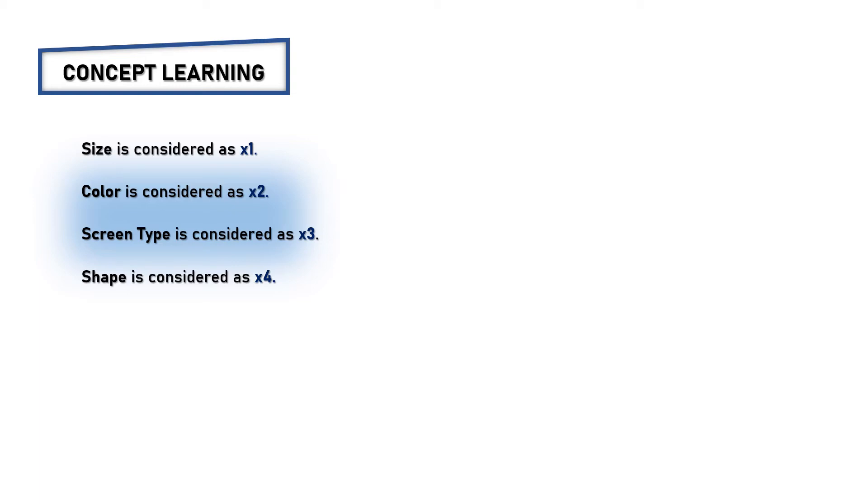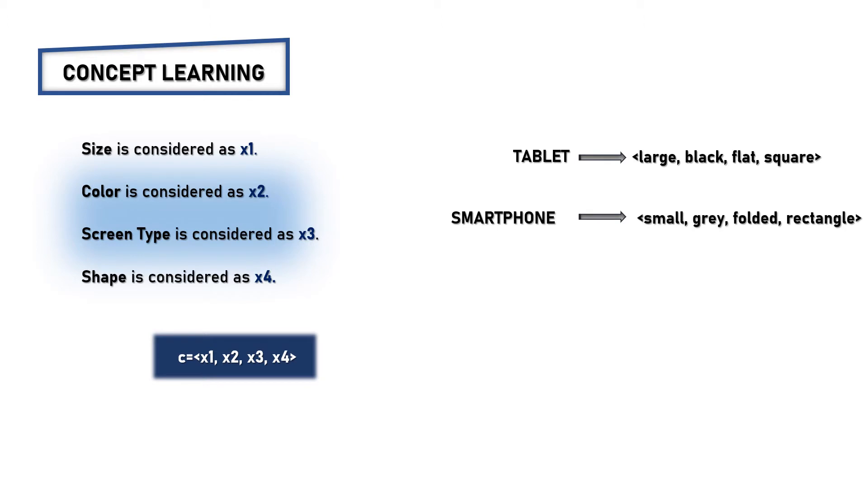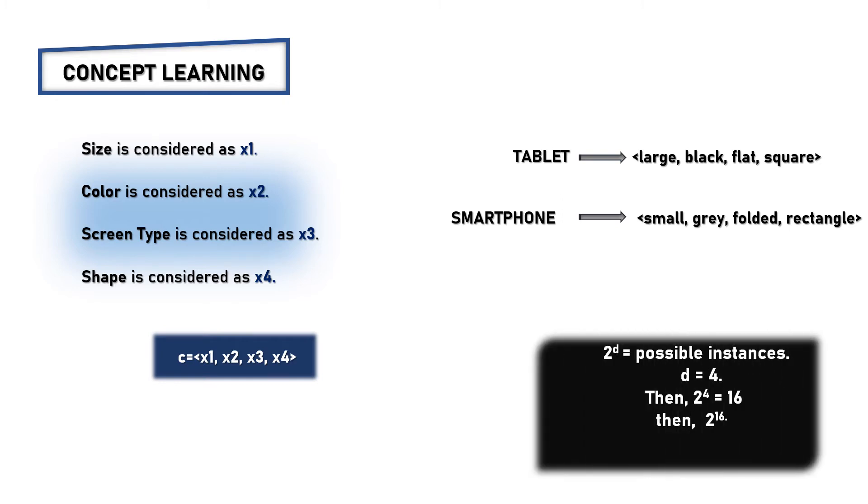Each feature is represented as unique. Here, C equals X1, X2, X3, X4. Tablet has the features of large, black, flat, square and smartphone has the features of small, gray, folded, rectangle. For two possible instances, here comes 2 power D equals possible instances. D equals 4. Then 2 power 4 equals 16, then 2 power 16.